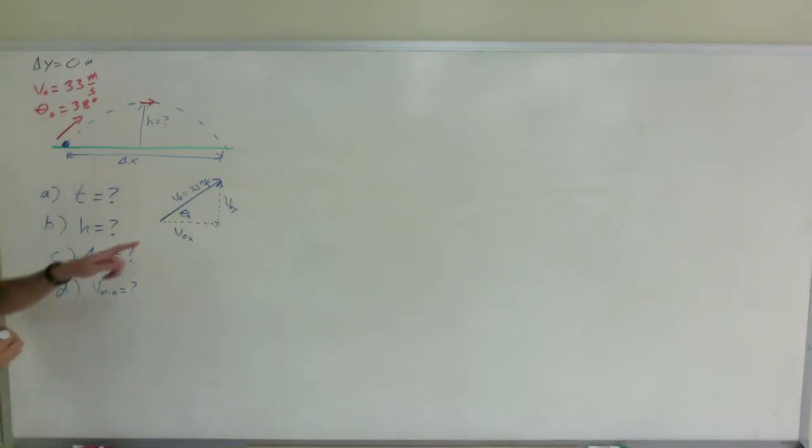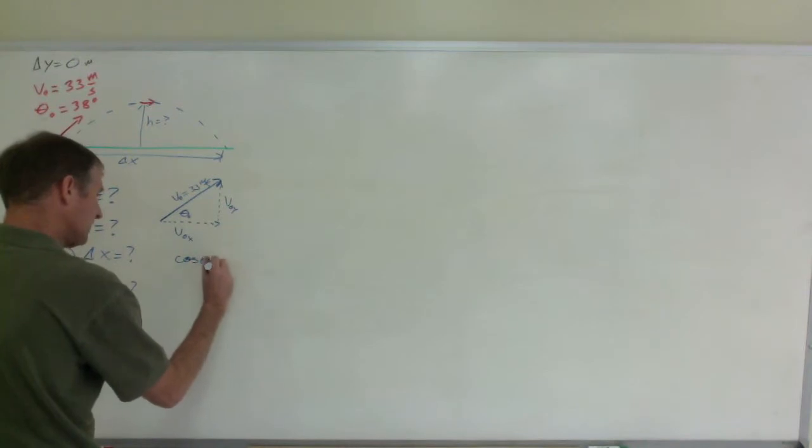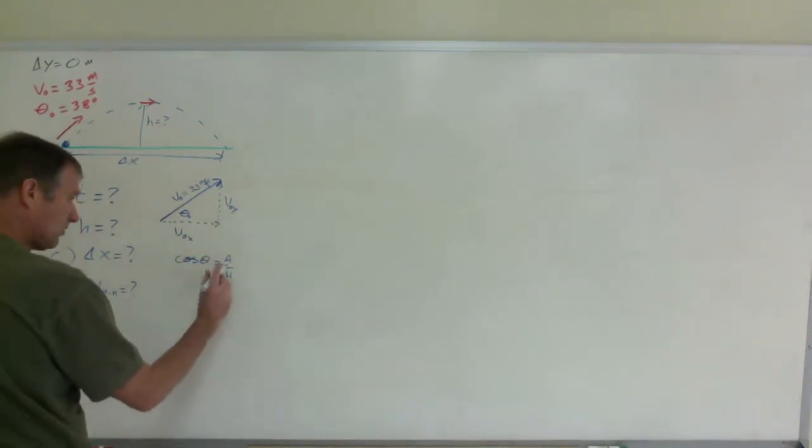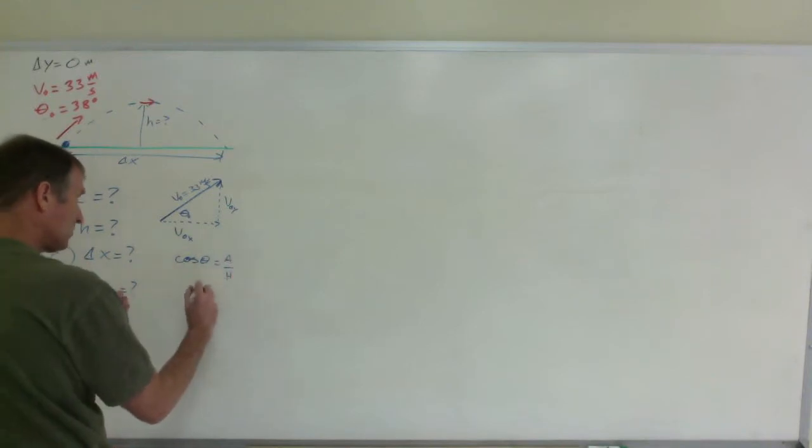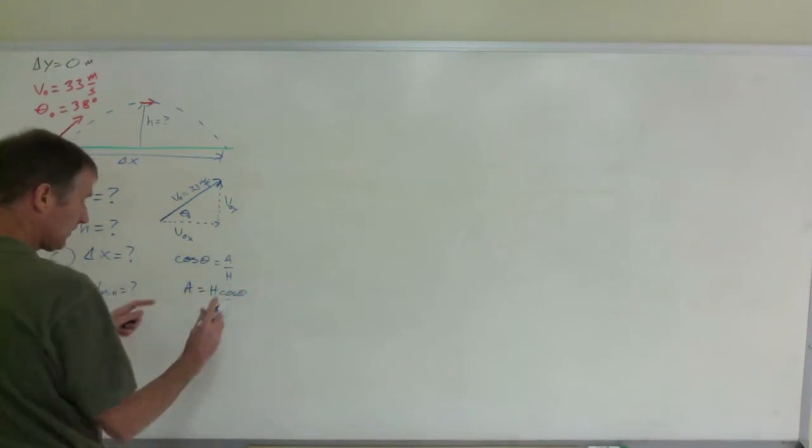Now you have a right triangle, you know the angle and the hypotenuse. So to find v sub zero x, remember cosine - the cosine of an angle is adjacent over hypotenuse. I need to find that adjacent side because that is what that is. So if I multiply both sides by h, which in this case is 33, then the adjacent side equals h times the cosine of the angle. So that is how I will find that.